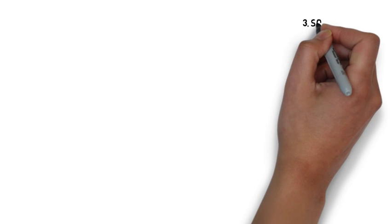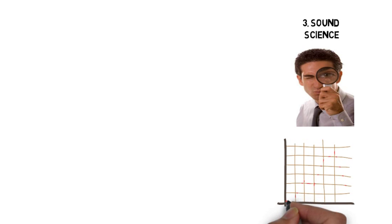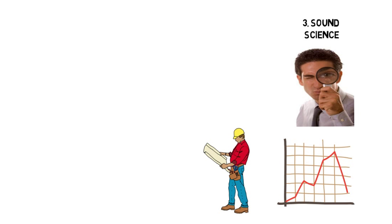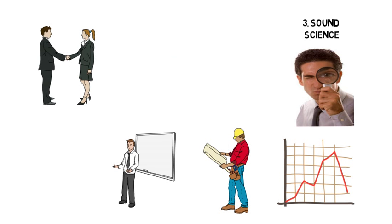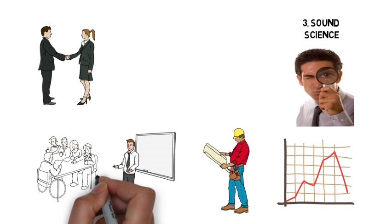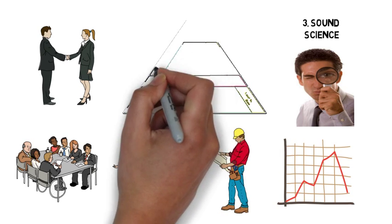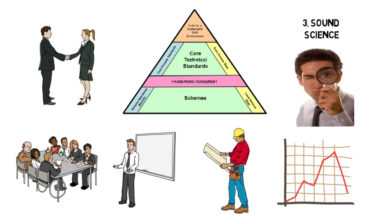The third principle is that BREAM is based on sound science, the latest scientific and building research. BREAM has access to a broad range of industry and scientific experts and has extensive consultations in evolving new versions of BREAM schemes. These include official technical steering groups and a standing panel of experts. The BREAM core technical standard is at the heart of our code for a sustainable built environment.